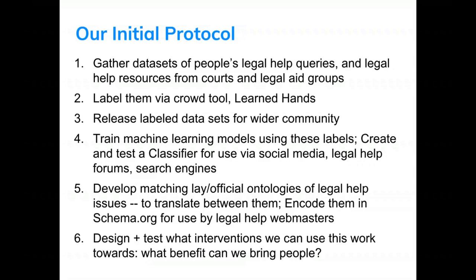We might also be able to look at population-level data — for example, looking at all the questions coming into an agency and making a statement about what services are needed. At the end of the day, this model is only going to be a best guess. It's not a robot lawyer — it's trying to make it a little bit easier for people to get the information they need, even if they don't know the right terminology to search for.